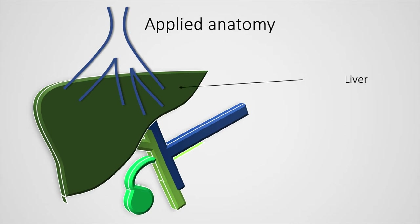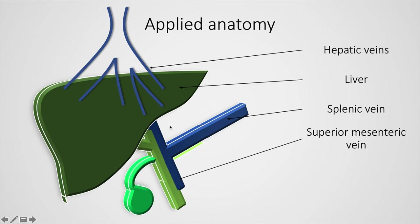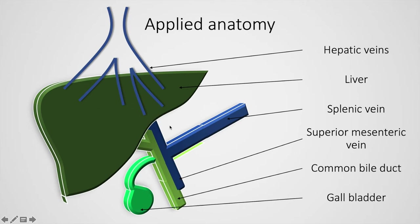This is the liver, this is the hepatic vein, this is the splenic vein. The superior mesenteric vein and the splenic vein join to form the portal vein, which is seen here. This is the common bile duct and this is the gallbladder.